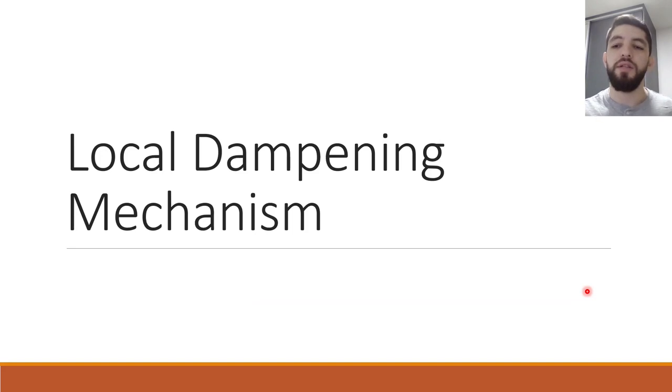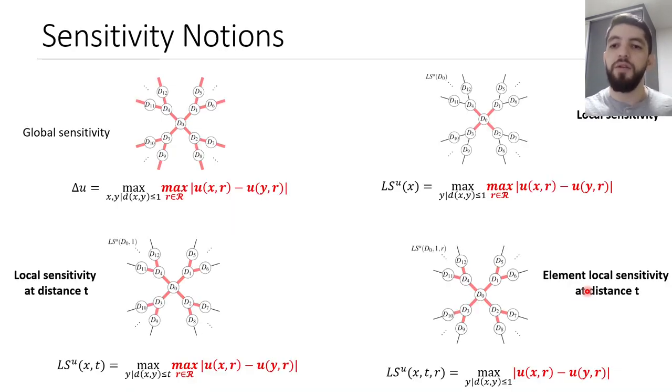To answer that question, we present the local dampening mechanism. Here we propose new sensitivity notions, as the local sensitivity, local sensitivity at distance t, and the element local sensitivity at distance t. Those sensitivity definitions are new to the non-numeric setting, and they are also smaller or equal than the global sensitivity.